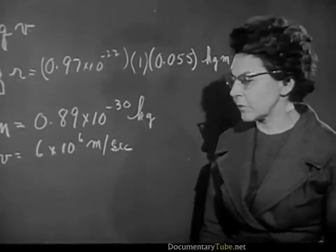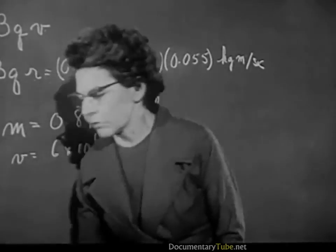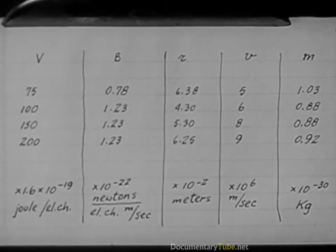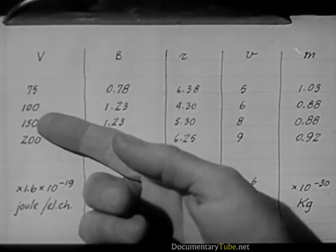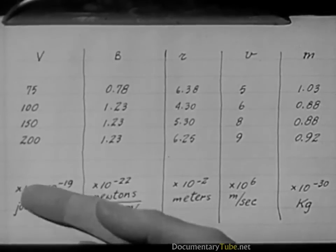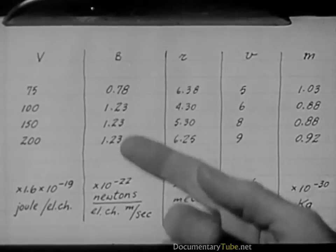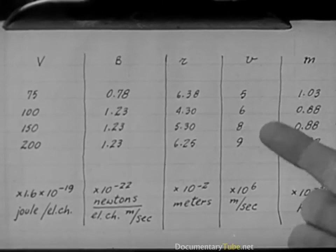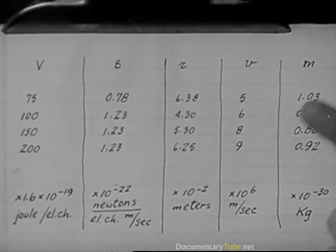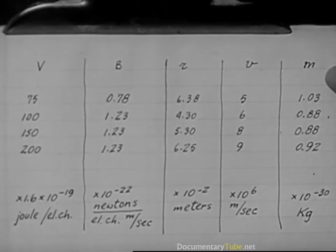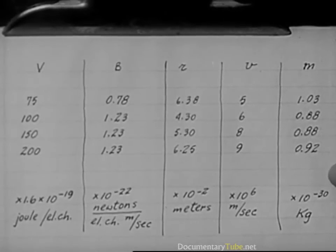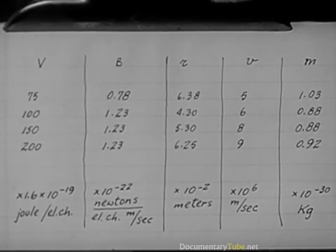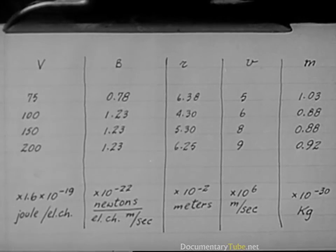I have the results of some other measurements made with different values of V and B. Although the accelerating potential varies quite a bit and the field varies — giving different values for the radius of the circle and for the velocity of the electrons — the value we get for m turns out to be always just about 10 to the minus 30. In other words, no matter how we do this experiment, we always get about the same value for the mass of an electron.